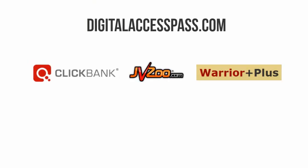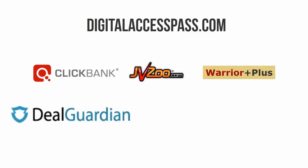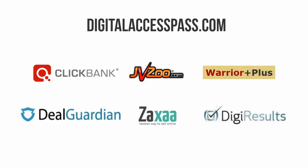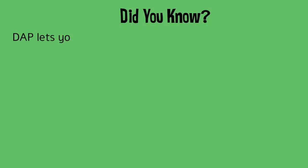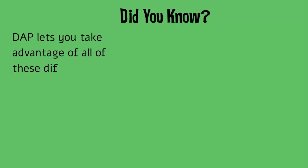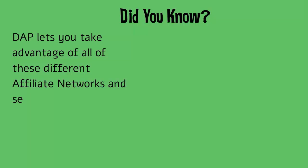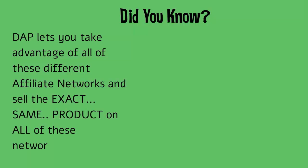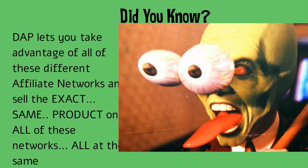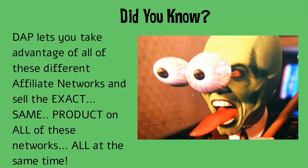Dapp supports not just Clickbank, JVZoo, and Warrior Plus but also affiliate networks like DealGuardians, AXA, and DigiResults. One more rarely mentioned feature of Dapp is that it lets you take advantage of all these different affiliate networks and sell the exact same product on all of these networks all at the same time. Let's take a look at how this is set up behind the scenes.